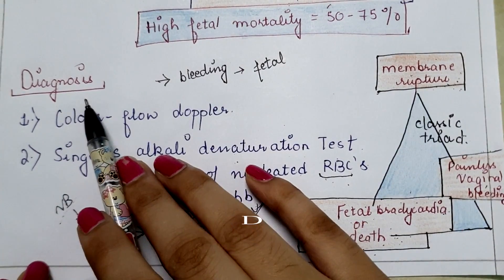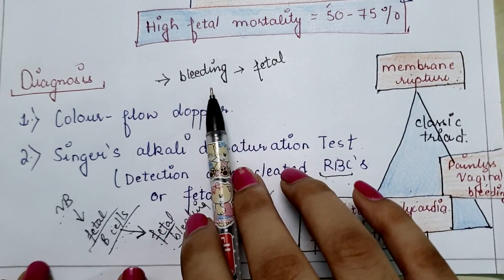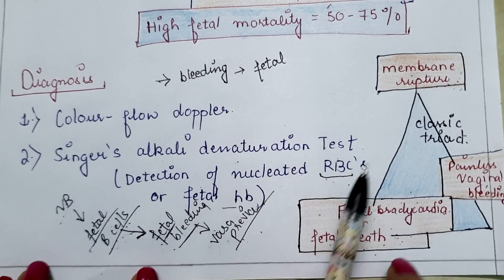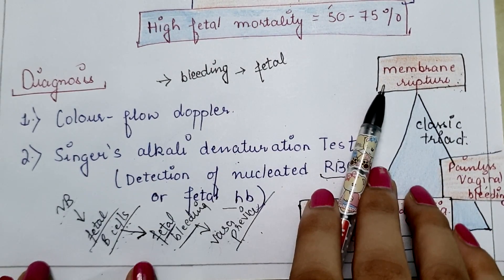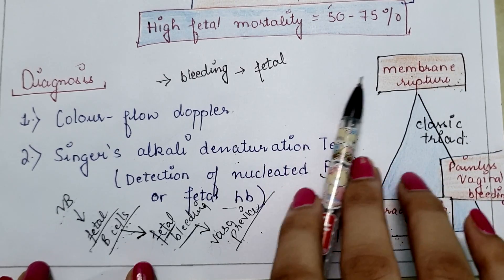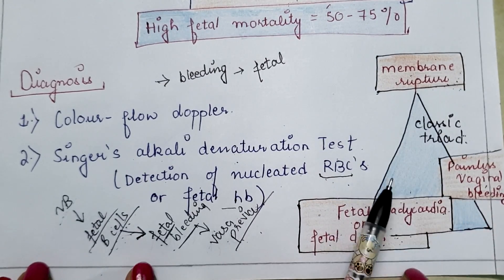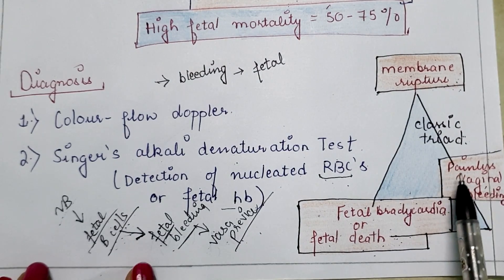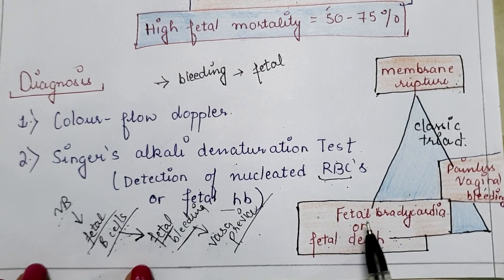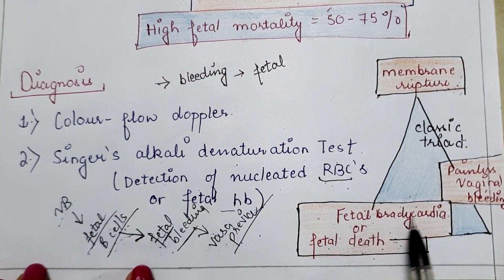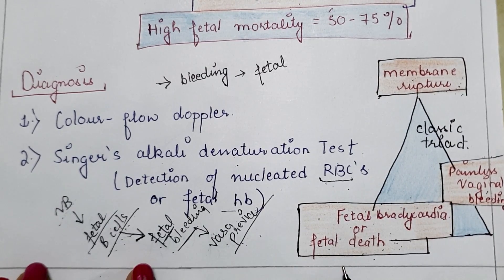Next is the diagnosis of vasa previa. One thing should be clear: in vasa previa the blood loss is fetal. The classic triad consists of: first, membrane rupture — since fetal blood vessels are present in the amnion and chorion, if these membranes rupture the fetal vessels also rupture. Second, painless vaginal bleeding occurs. Third, fetal bradycardia — because of decreased blood supply to the baby, the fetal heart rate decreases, or fetal death may occur due to fetal blood loss.